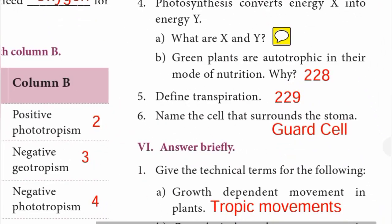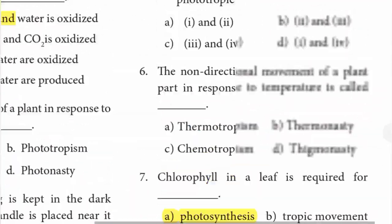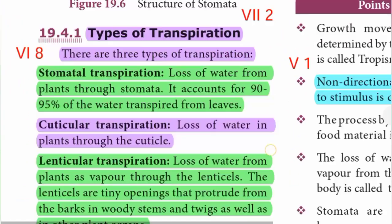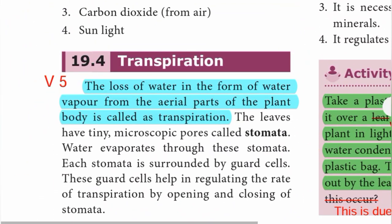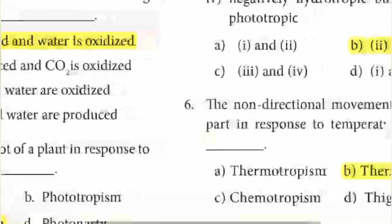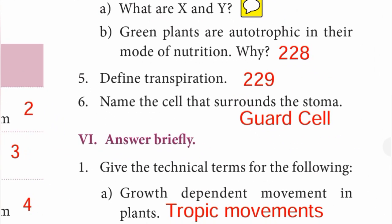Question number five: define transpiration. From page 229: transpiration is the loss of water in the form of water vapor from the aerial parts of the plant body. Question number six: name the cell that surrounds the stoma. Answer is guard cell.